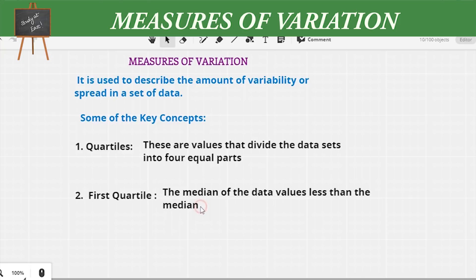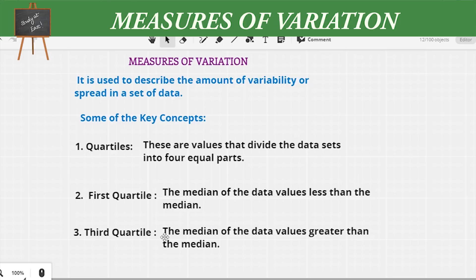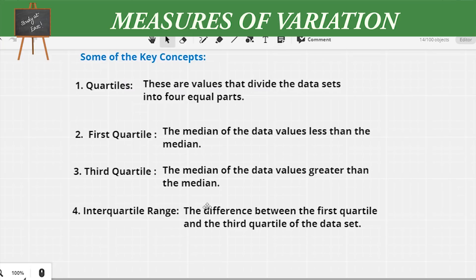The second concept is the first quartile. The first quartile is the median of the data values less than the median. The entire set will have a median, and the median of the data values less than that median is called the first quartile. The third quartile is the median of the data values greater than the median.